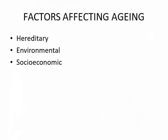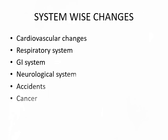The factors which affect ageing include hereditary, environmental, and socio-economic factors. As the body ages, each system undergoes various changes, called the physiological signs of ageing. We will discuss system-wise changes including the cardiovascular system, respiratory system, gastrointestinal, urological, occurrence of malignancies, and accidents.